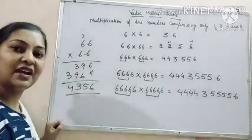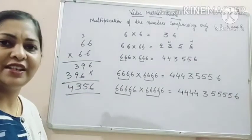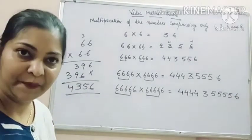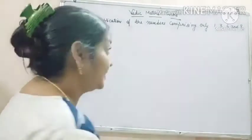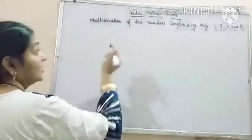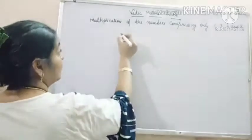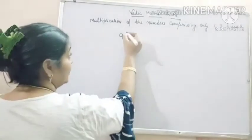This is our answer. So easy it has become. Now the next number is 9. How to find the product of the number comprising of 9 only?